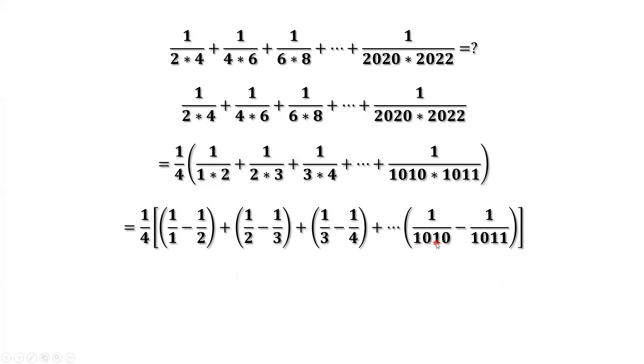Here we can do the consecutive cancellation now. Let's mark it. Look at here. This term, negative one half. Here we have positive one half. Negative one third, we have positive one third. Negative one fourth, we have one here. And we have one here, cancel this one.